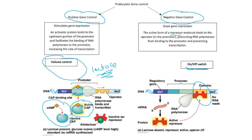So again, positive gene control stimulates gene expression — it turns the volume up. If glucose is around, then CAP is not going to be helping. RNA polymerase can still bind to the promoter, but it just won't bind at a very high rate. Its affinity is much lower, meaning it doesn't latch on quite as well.